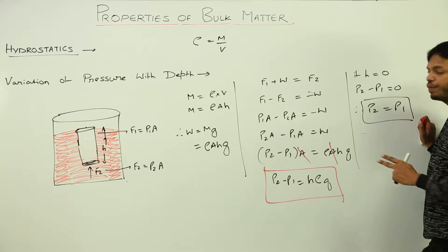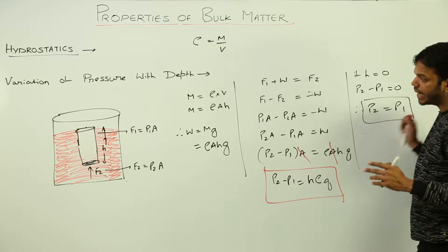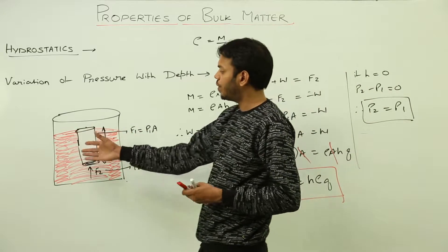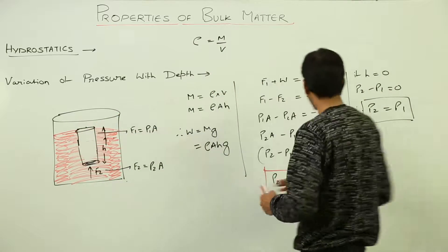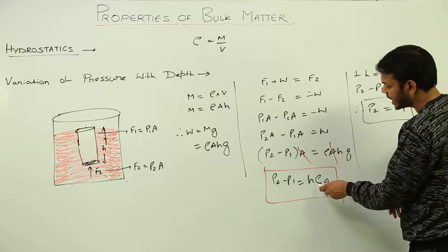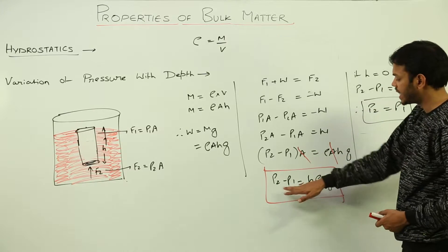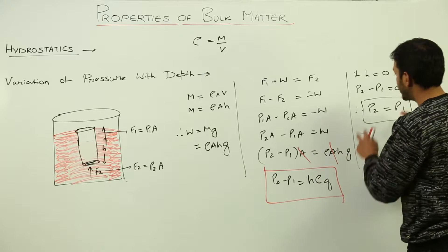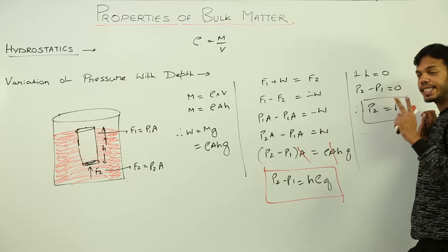So p2 equals p1, which shows that pressure inside a liquid is equal between any two points if they are at same height. Pressure is entirely depending on height, density, and gravity, where these two factors are constant. Pressure is depending mostly on height, so pressure at two points which are at same height in the liquid column is always equal.